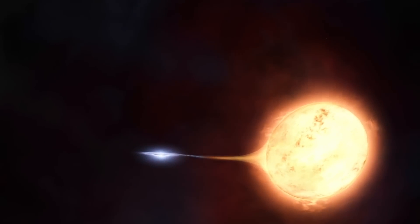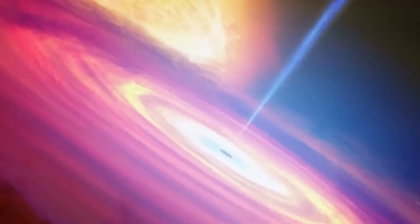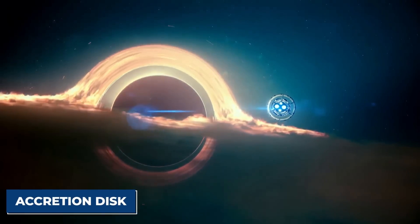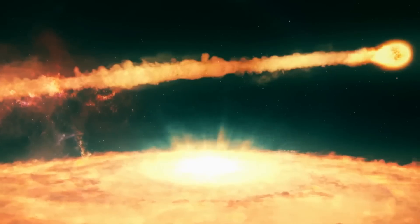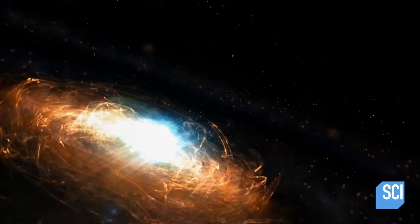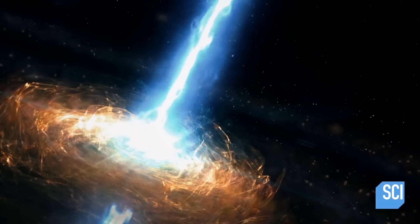Sometimes, a black hole's gravity is so strong that it can pull off the star's outer gases and grow a disk around itself called the accretion disk. As gas from the accretion disk spirals into the black hole, the gas heats to very high temperatures and releases x-ray light in all directions.